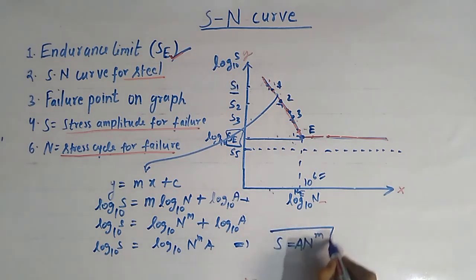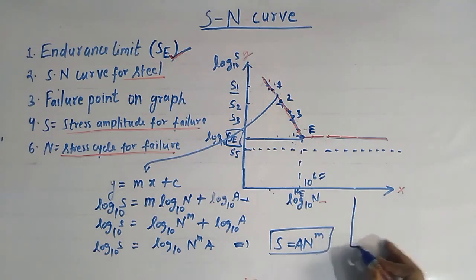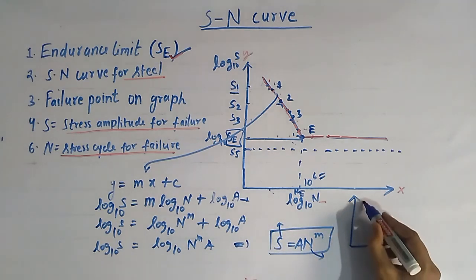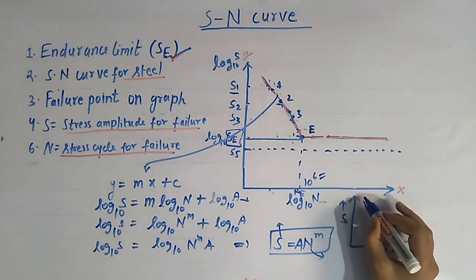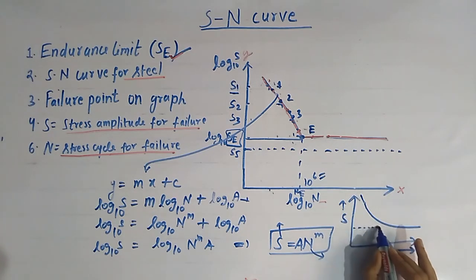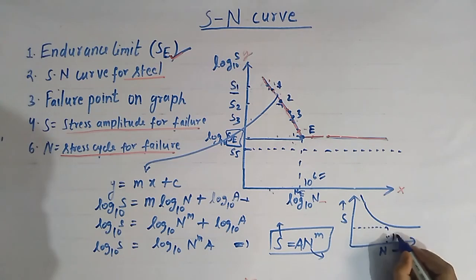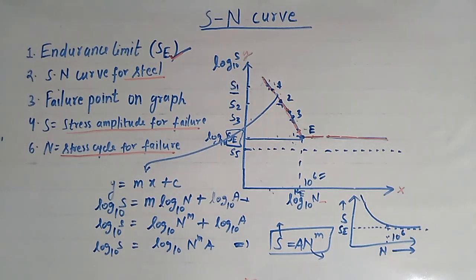This formula S = a·N^m can be used to generate an equivalent graph, plotting the failure stress amplitude S against the number of cycles N. In this graph, the curve becomes asymptotic, corresponding to 10^6 cycles, and that asymptote represents the endurance limit. So the SN diagram is used to compute the endurance limit for a specimen. I hope you liked the video — please subscribe to my channel and press the bell icon.